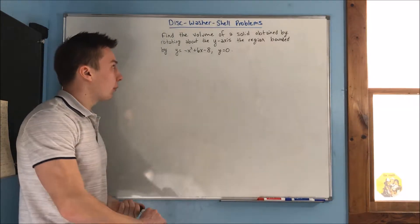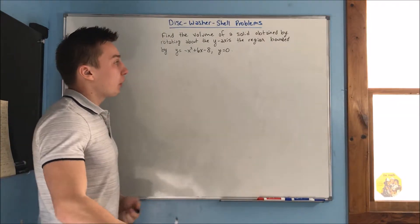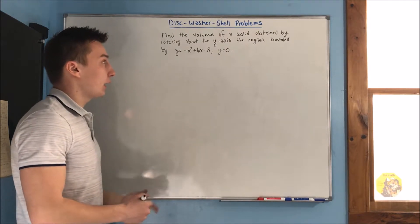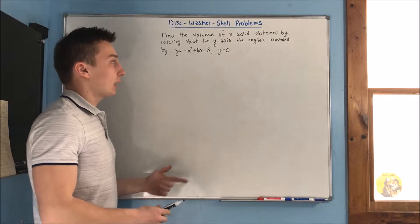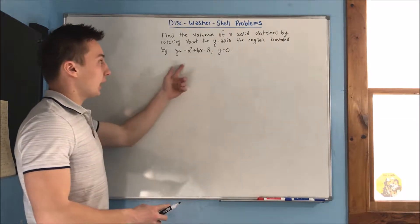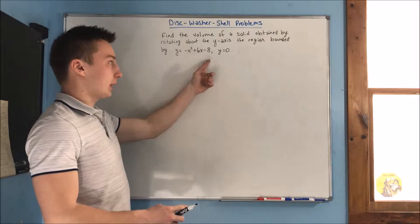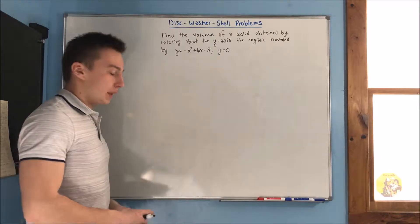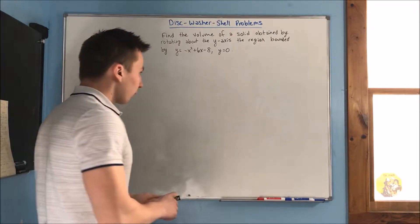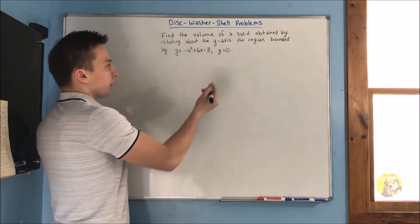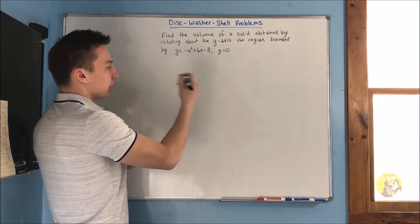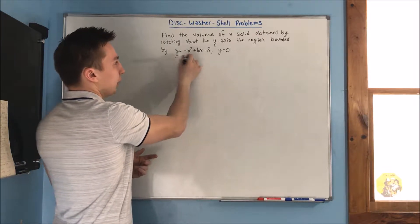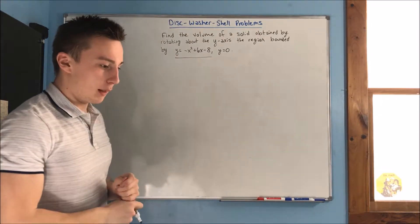Our first problem: find the volume of a solid obtained by rotating about the y-axis the region bounded by y equals negative x squared plus 6x minus 8 and y equals 0. First we need to be able to graph this, so we should start by graphing this parabola.